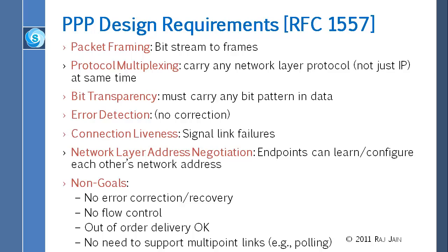Network layer address negotiation: when you first connect, you do not have an IP address, so PPP provides a facility to get one. The non-goals: PPP will not try to correct or recover errors, so no retransmissions, no error recovery, no flow control, no windowing, no out-of-order delivery. Also, PPP was not designed to support multipoint links like Ethernet, where multiple people are on the same line.